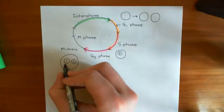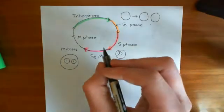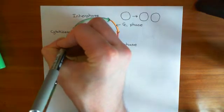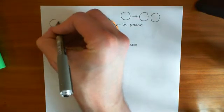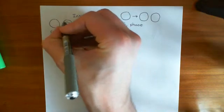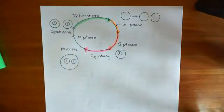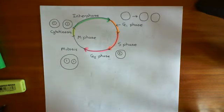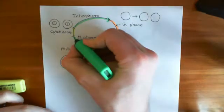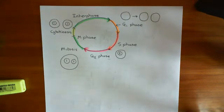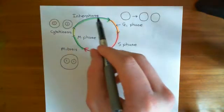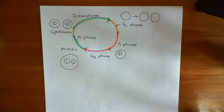Each of those daughter cells will have a single copy of each chromosome. So that's cytokinesis. The activation of the Wnt pathway basically moves the cell from interphase to G1 phase — it kickstarts the cell cycle and makes the cell divide into two.